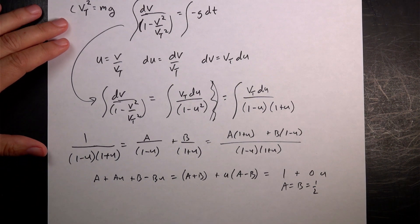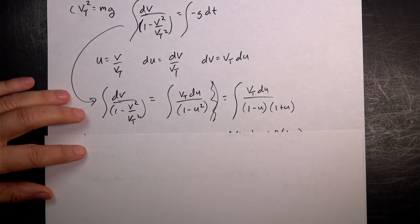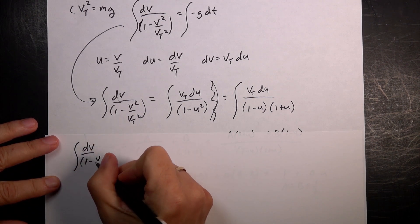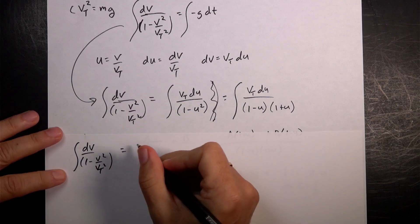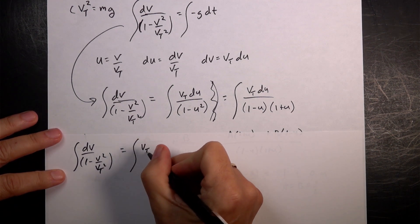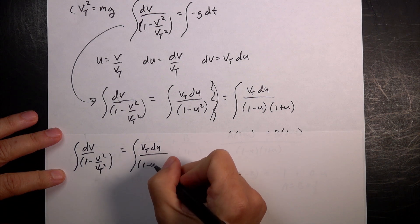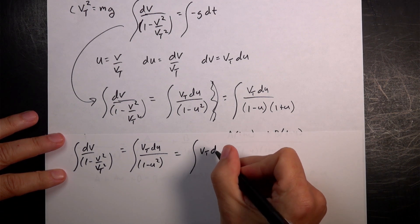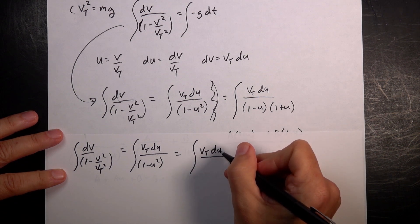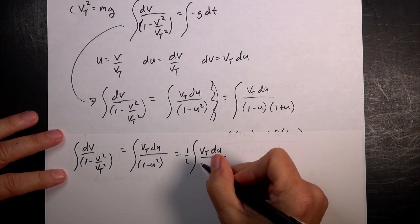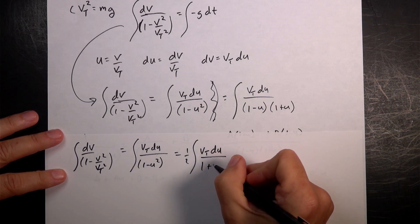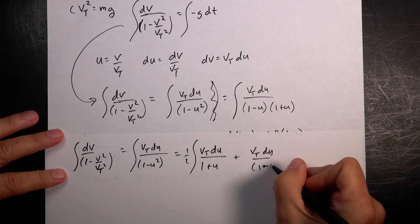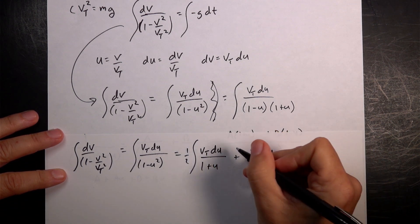So, whew, okay. So, that means that we have now the integral. I'm going to write it out. dv 1 minus v over vt squared equals, I'm going to write that as, I shouldn't have done that, vt du over 1 minus u squared equals the integral of vt du over, and there's a half. I'm going to write it out front. 1 half. 1 over 1 plus u plus vt du over 1 minus u. That's all integrated.